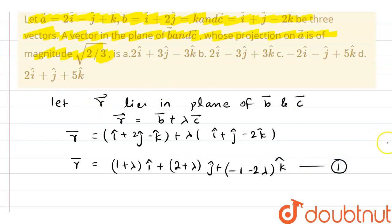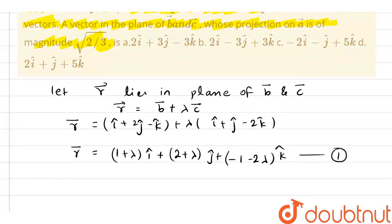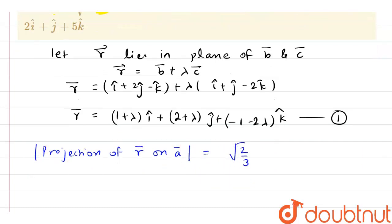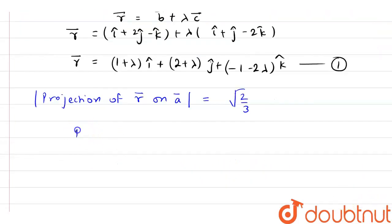Now we have given that projection of vector r on vector a is given with magnitude of square root 2 by 3. Now first of all, let's find out what is projection. Projection of vector r on a is given as r dot a by magnitude of a. Now what is my r? My r is in equation 1.